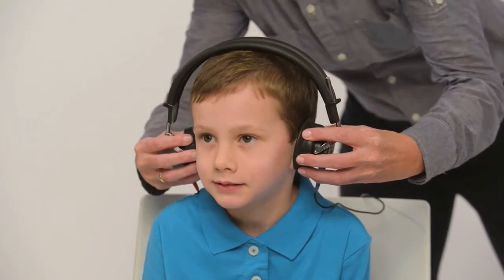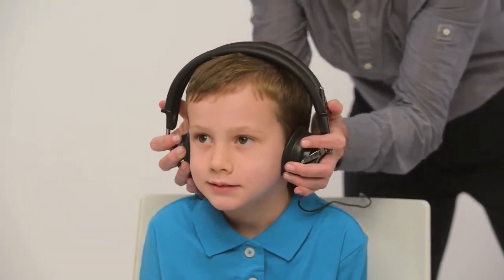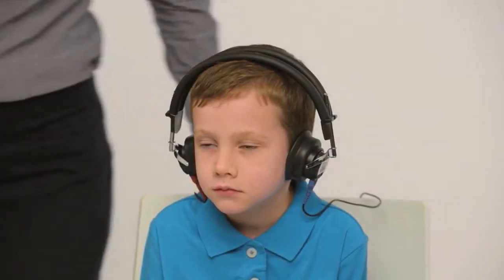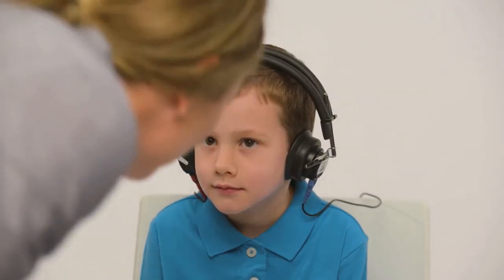Place headphones directly over the child's ears with red phone on the right ear, blue on the left. Remove any obstructions that may interfere or be uncomfortable, such as glasses. Adjust the headband so the headphones are centered over the ear canal.